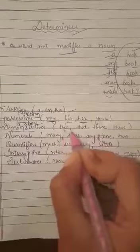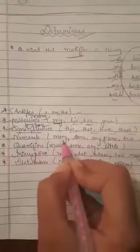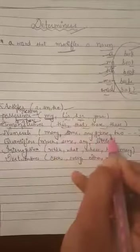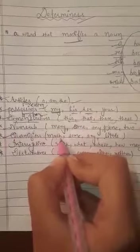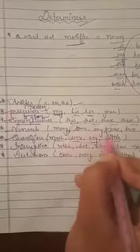Next are numerals. Numerals are used for the things which can be counted like many, some, any, few, one, two, etc. Next is quantifiers. Quantifiers are those which are used for uncountable nouns which we can't be counted. For example much, some, any, little. Some and any are both used as a numeral and quantifiers. I'll tell you what is the difference between some and any also.